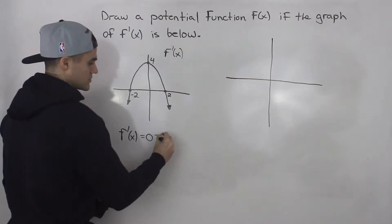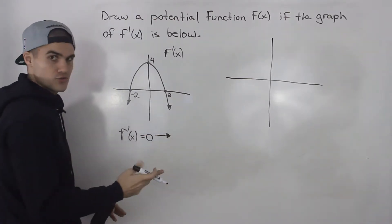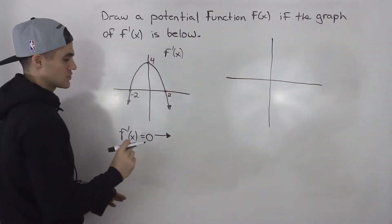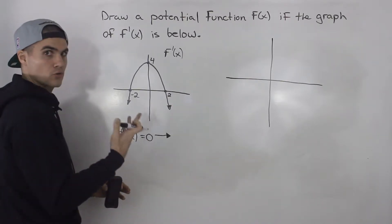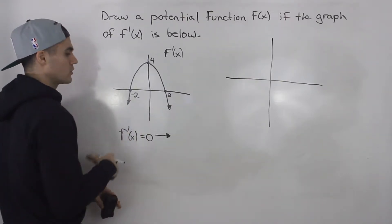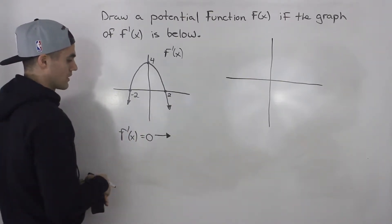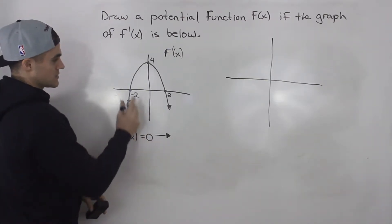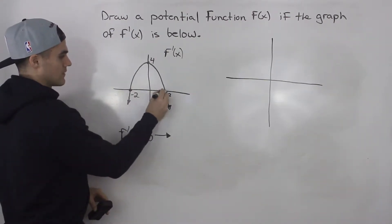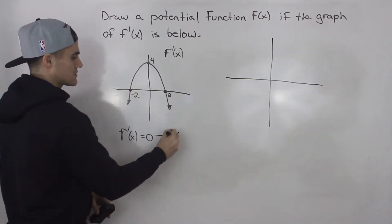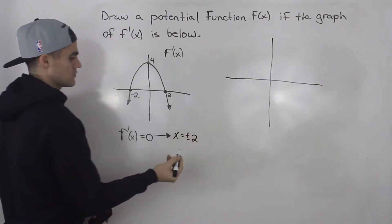The first thing I always look for is: when is the derivative equal to zero? Because we know when the derivative is equal to zero, usually there's going to be either a local maximum or a local minimum at that point. And the derivative is equal to zero at x values plus or minus two.